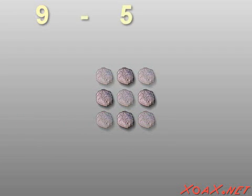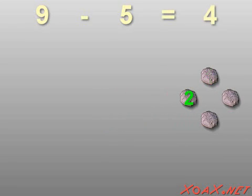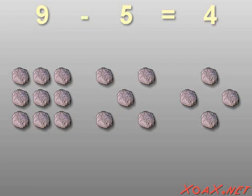and we lose five of them - one, two, three, four, five - then we have four rocks left: one, two, three, four. So nine minus five equals four.